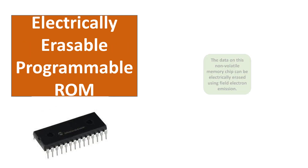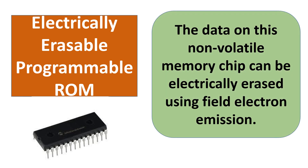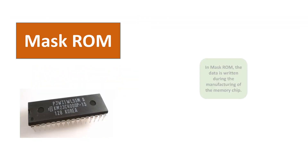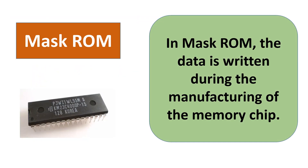In Electrically Erasable Programmable ROM, the data can be electrically erased using field electron emission. In Mask ROM, the data is written during the manufacturing of the memory chip.